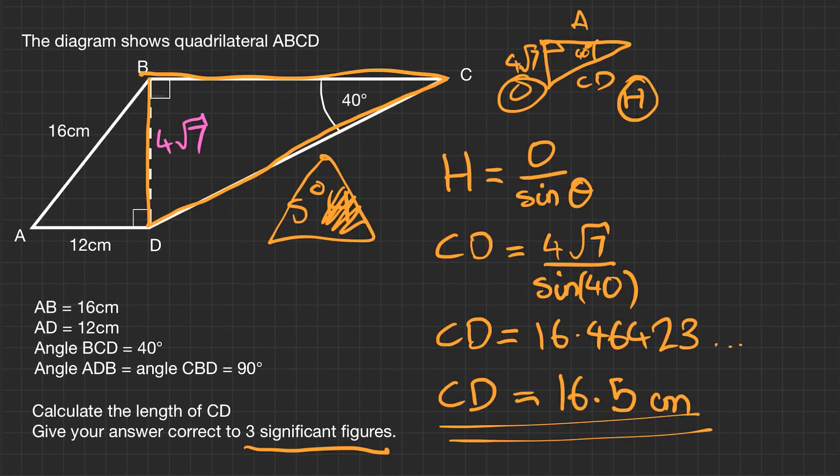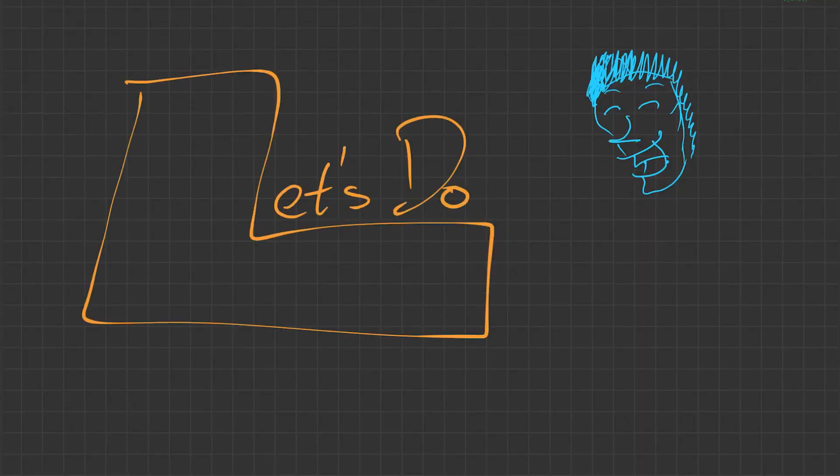Let's just double check we've completed the question and answered it. It says calculate the length of CD, give your answer to three significant figures. Have we done that? Yes, we've calculated the length of CD, we've got 16.5 centimeters. Big question, break it down, and it's not too bad. That's all for finding sides and basic trigonometry covered. Any elements you aren't sure of, feel free to check out my other videos. Stay safe and healthy, and I'll see you next time.